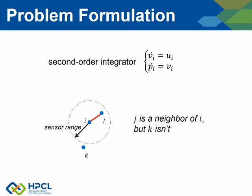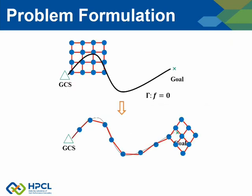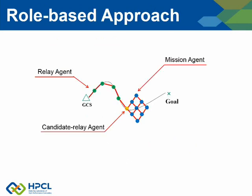We formulated the problem and regard robots as agents with a second-order integrator model. All agents have the same sensor range and can receive the state of other agents within it. For example, we say J is a neighbor of I, but K isn't. The initial state has all agents near the GCS and ready to take off. A desired final state may have some agents reaching the destination and some left on the way to keep contact with the GCS to realize the coordinated behavior.